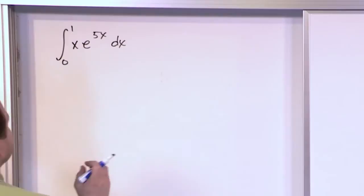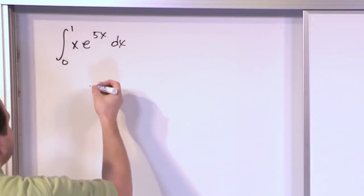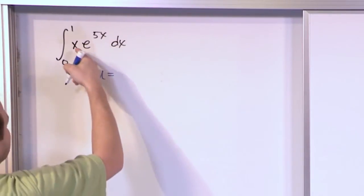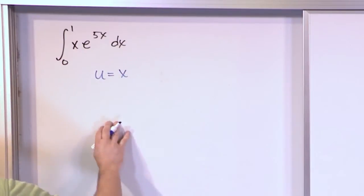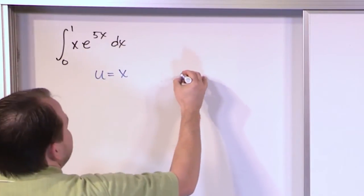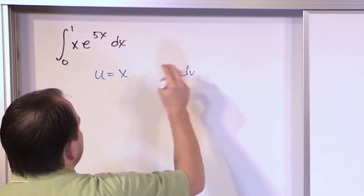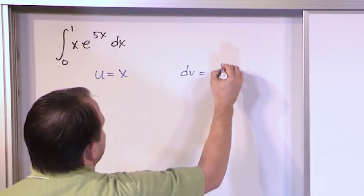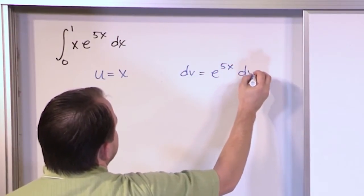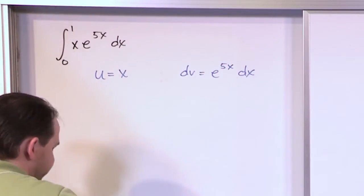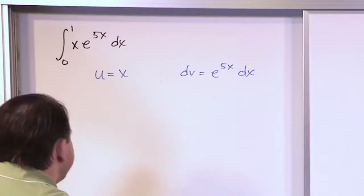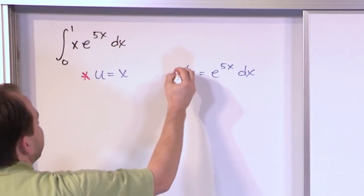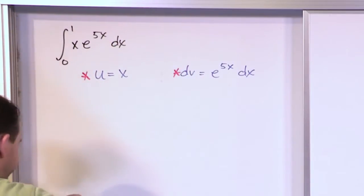We need to define u. In general when you see something like this, you want u to equal whatever is destructible — so u = x — and you want dv to equal everything else, so dv = e^(5x) dx.